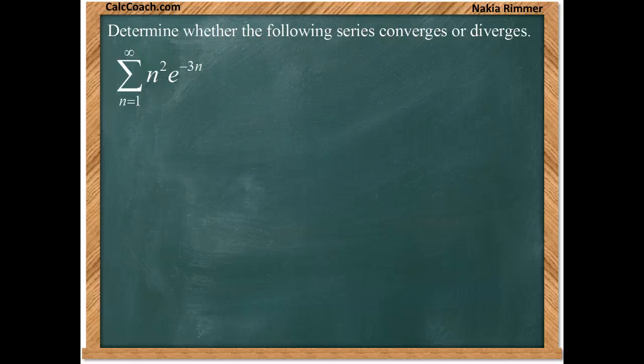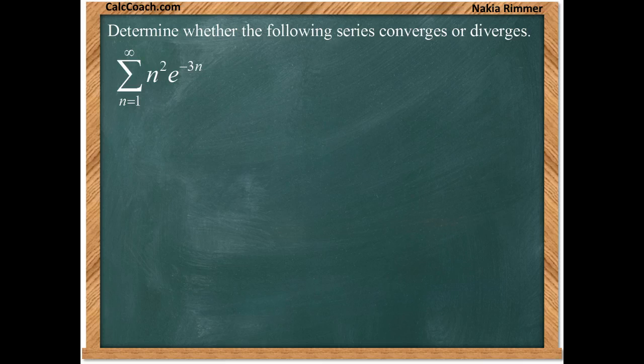Determine whether the following series converges or diverges. The sum from n equals 1 to infinity of n squared e to the negative 3n.